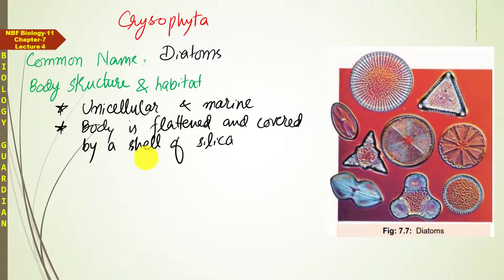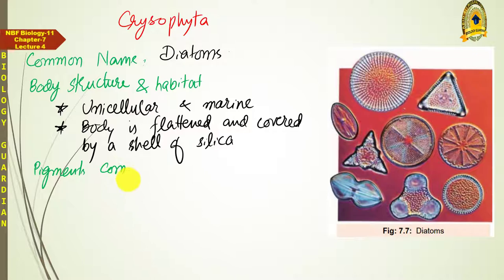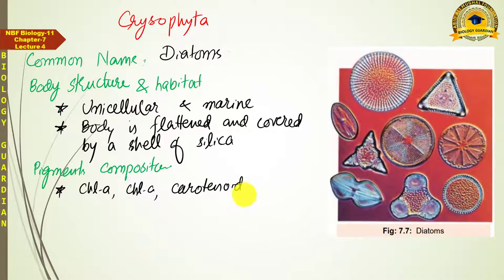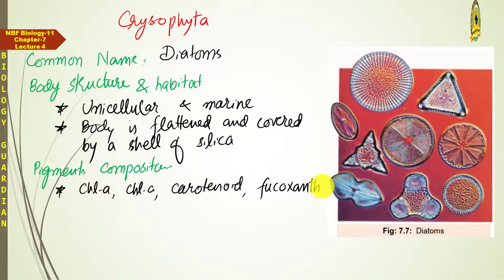Regarding the pigment composition of Chrysophyta, it is similar to Dinoflagellates: Chlorophyll A along with Chlorophyll C, and carotenoids. A special carotenoid called fucoxanthin is found in Dinoflagellates and is also found in Diatoms.